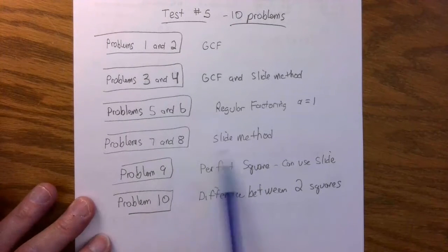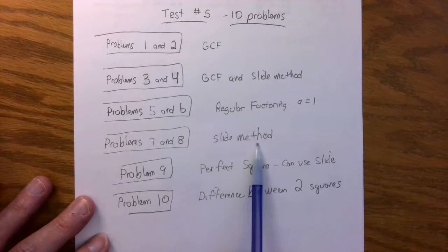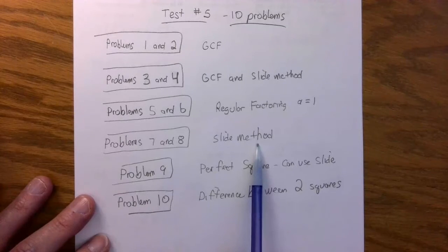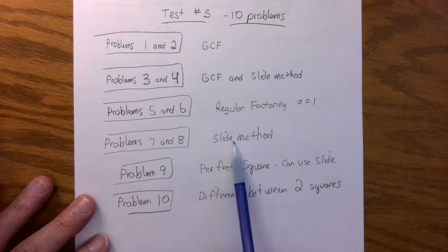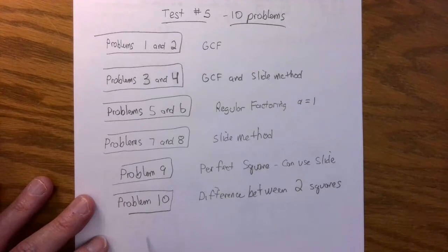Problem seven and eight are the slide method, where there's a number in front of the x squared. You have to slide back. Use the slide method. Don't forget to divide the slide back out.